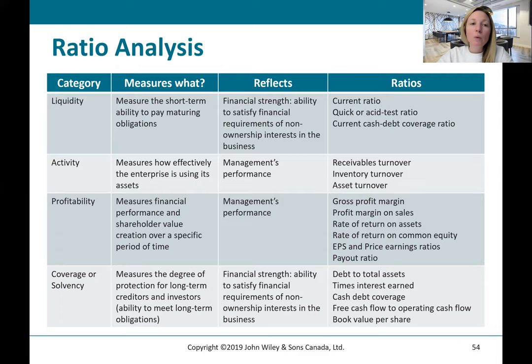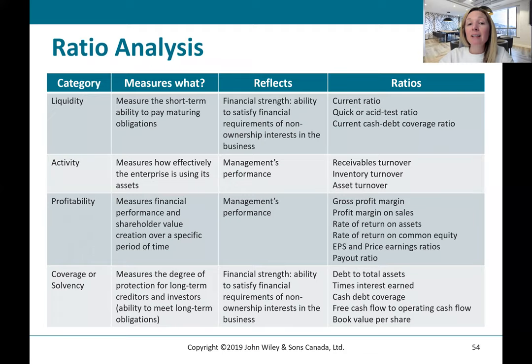There are different types of ratios that measure different things. Liquidity ratios — such as the current ratio, quick ratio, or current cash debt coverage ratio — measure the short-term ability to pay maturing obligations. Activity ratios — like receivables turnover, inventory turnover, or asset turnover — measure how effectively the enterprise is using its assets. Profitability ratios — such as gross margin, profit on sales, and return on assets — measure financial performance and shareholder value over a period of time. Coverage or insolvency ratios — such as debt to total assets, times interest earned, and cash debt coverage — measure the degree of protection for long-term creditors and investors.